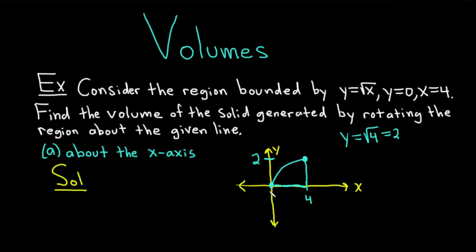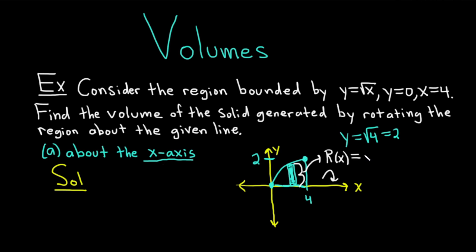We have to find the volume of the solid generated by rotating this region about the x-axis. I'm going to use a little arrow to indicate that we're rotating about the x-axis. When you're finding volumes using the disk method, your rectangles always should be perpendicular to the axis — this is called the axis of revolution. So draw the rectangle like this. This distance from the top of the rectangle to the axis of revolution is our radius, big R of x. Some books call it the outer radius. No matter where we draw the rectangle, this is going to be equal to the square root of x.